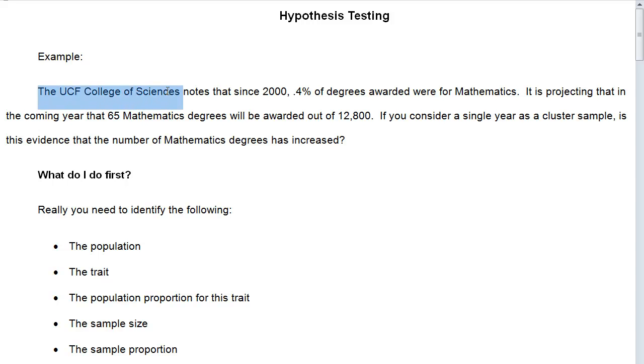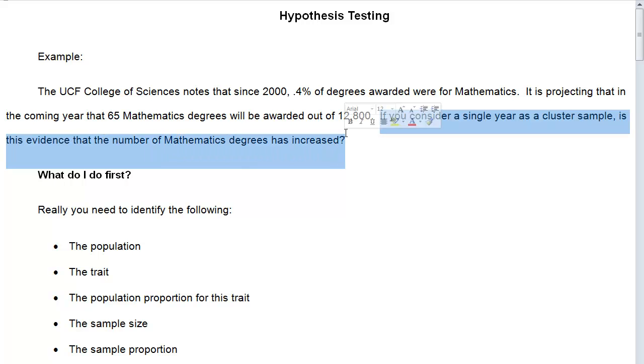The UCF College of Sciences notes that since 2000, about 0.4% of degrees awarded were for mathematics. It is projecting that in the coming year that 65 mathematics degrees will be awarded out of 12,800 degrees. If you consider a single year as a cluster sample, is this evidence that the number of mathematics degrees has increased?